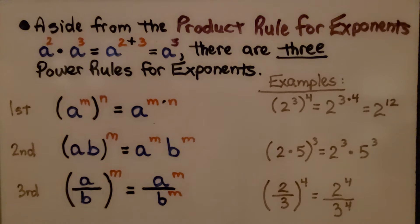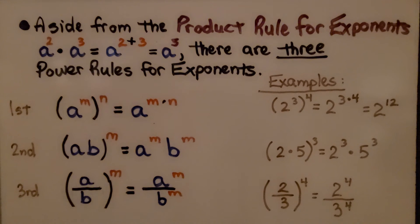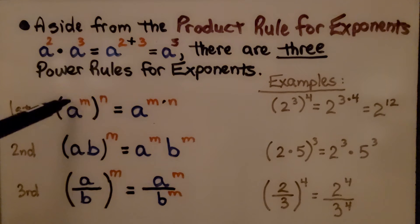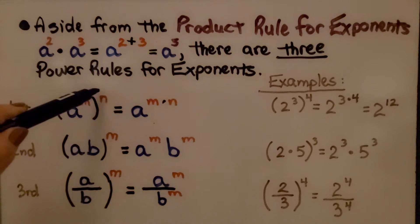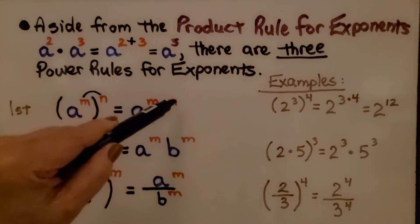Aside from the product rule for exponents — that's the rule that says if we have like bases and we're multiplying, we just add the exponents — there are three power rules for exponents. The first one says this variable a, raised to the m power and then raised to the n power, we just multiply these together and get a to the m times n.